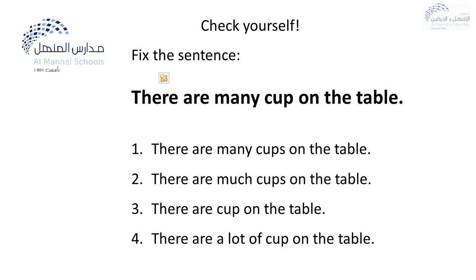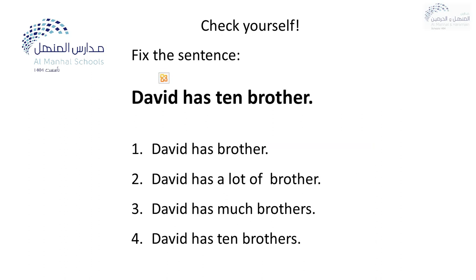Here we are trying to choose the correct answer. There are many cups on the table — or much cups — or a lot of cups. Which one is correct? There are many cups on the table. David has ten brothers — we add S at the end of the noun to make it plural.